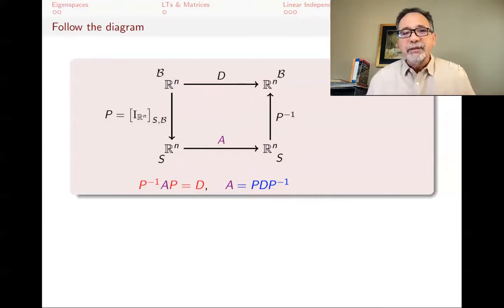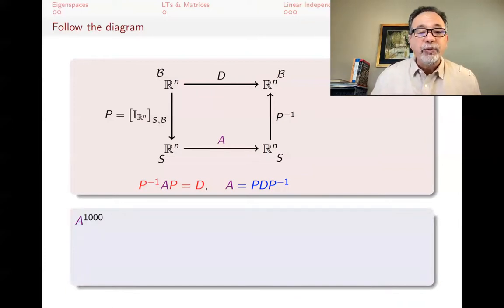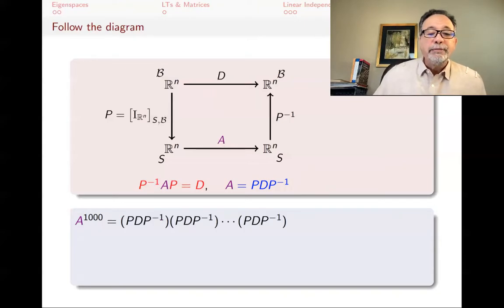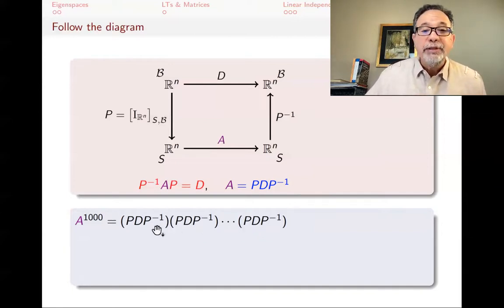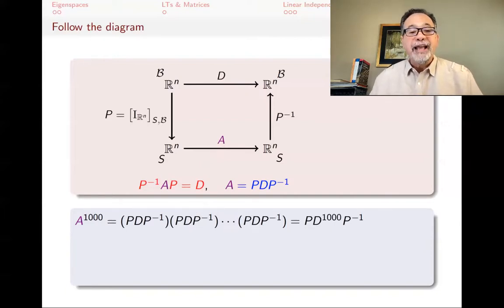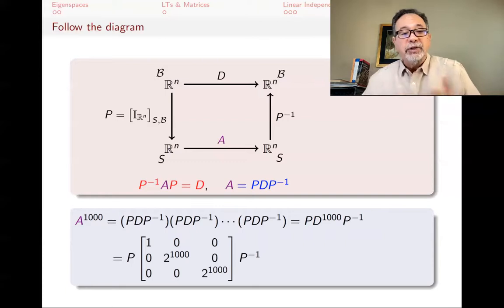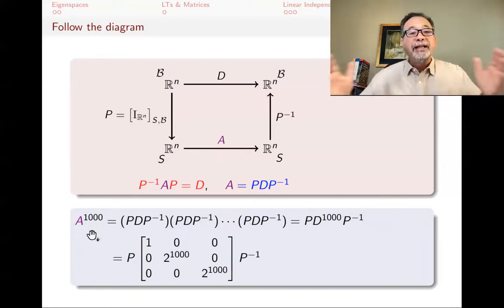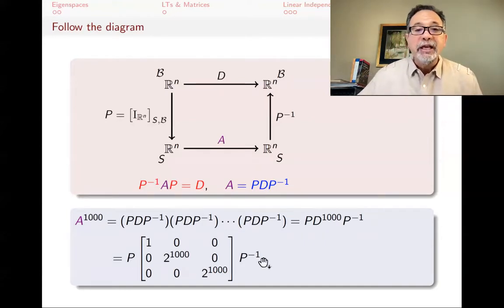Why is A equals P D P inverse useful? For example, to find A to the 1000th power: since A equals PDP inverse, raising to the 1000th power gives P D P inverse times itself 1000 times. The P inverse and P factors cancel in the middle each time, leaving P times D to the 1000 times P inverse. Finding D to the 1000 is trivial for a diagonal matrix — D was (1, 2, 2) on the diagonal, so D to the 1000 is (1 to the 1000, 2 to the 1000, 2 to the 1000) with zeros off-diagonal. So we reduced a massive computation to multiplying just three matrices.